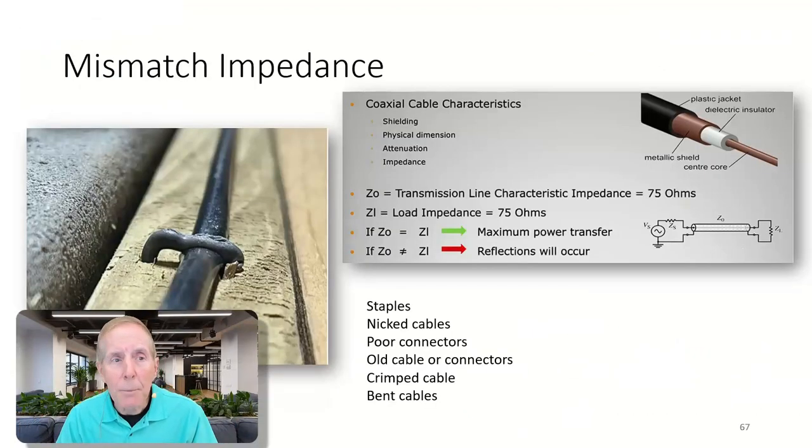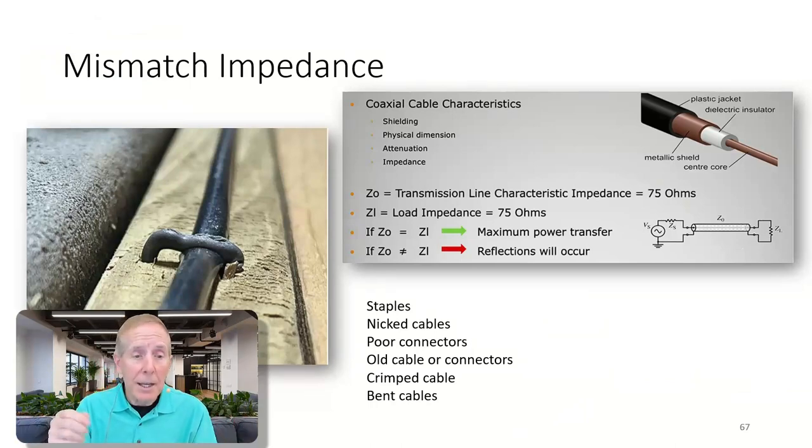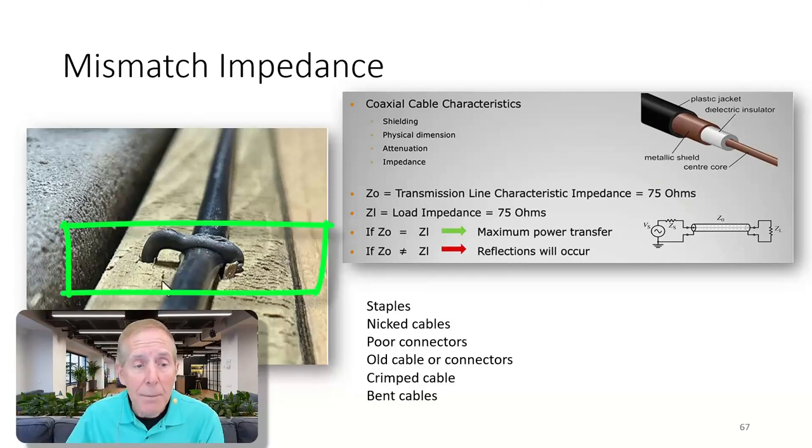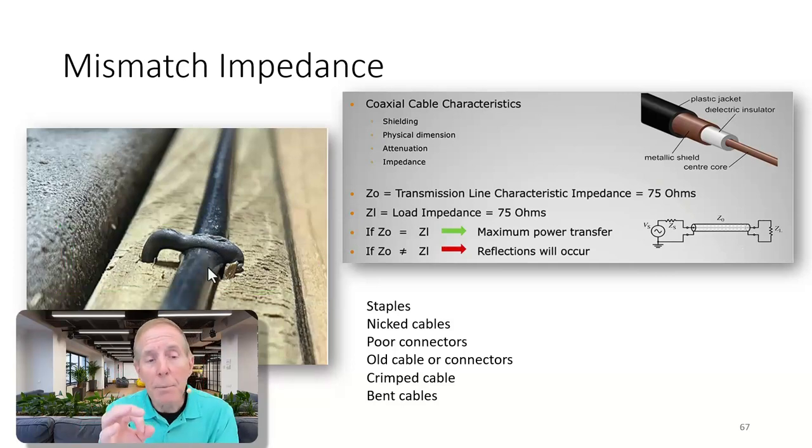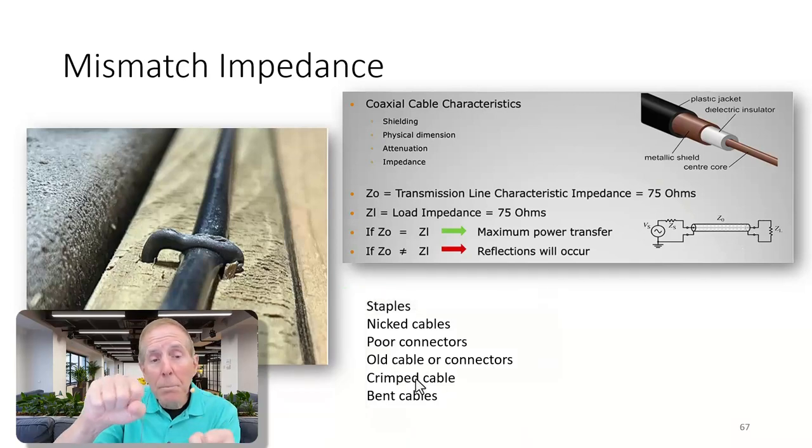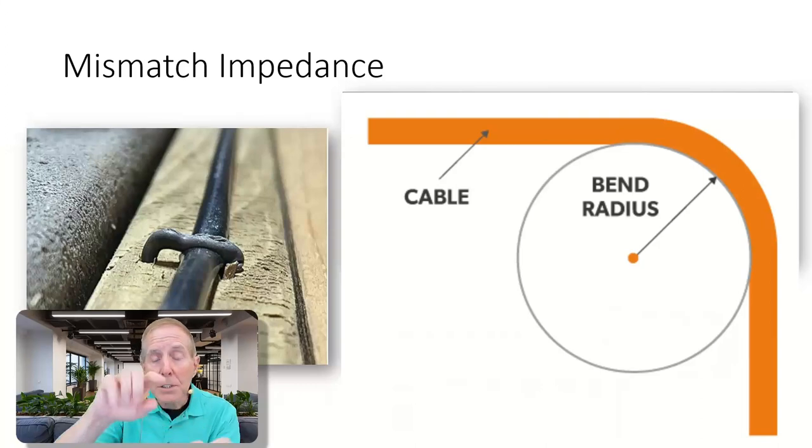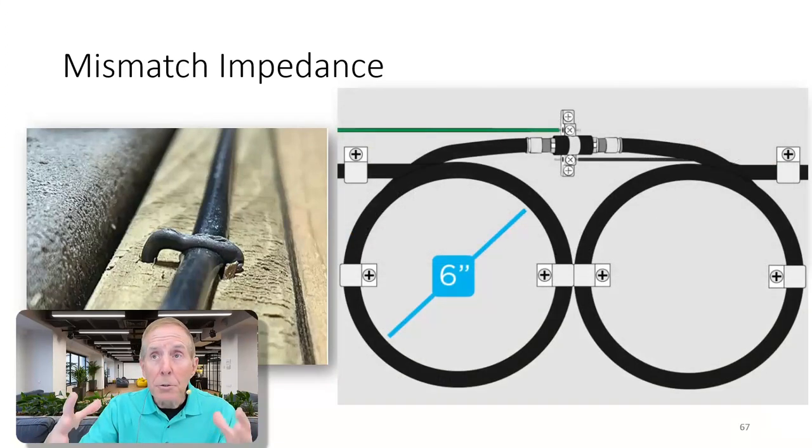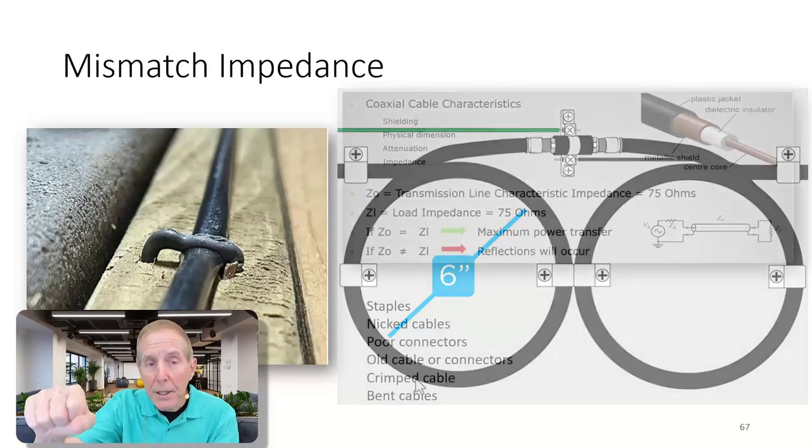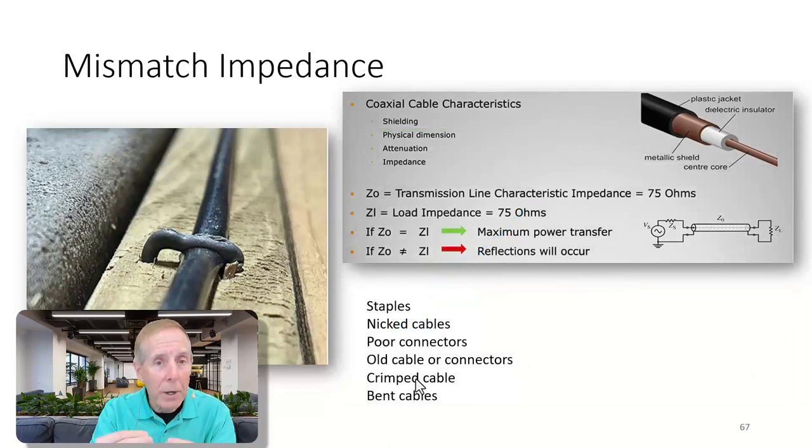Another problem within your home is cable mismatch impedance. If you have stapled coax cable - you can see here the coax cable has been stapled into place, say in your attic - that staple can cause problems by deforming the structure of the coax cable. You actually change the impedance of the cable. Bad. Nicked cables, poor connectors, old cables or connectors, crimped cables. If you bend that cable too harshly instead of allowing it to loop, you'll notice when you see cable installed, if they want to do a 90 degree turn or a 45 degree turn, they'll put a loop in the cable. When you change the characteristics of the coax cable, you're changing the impedance, which is going to cause drops.